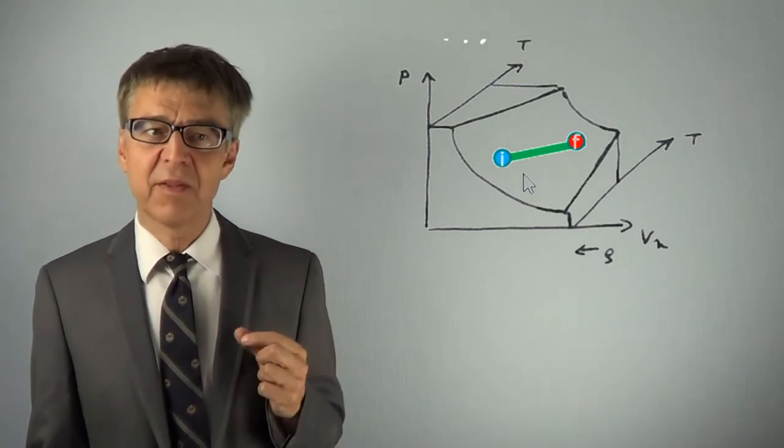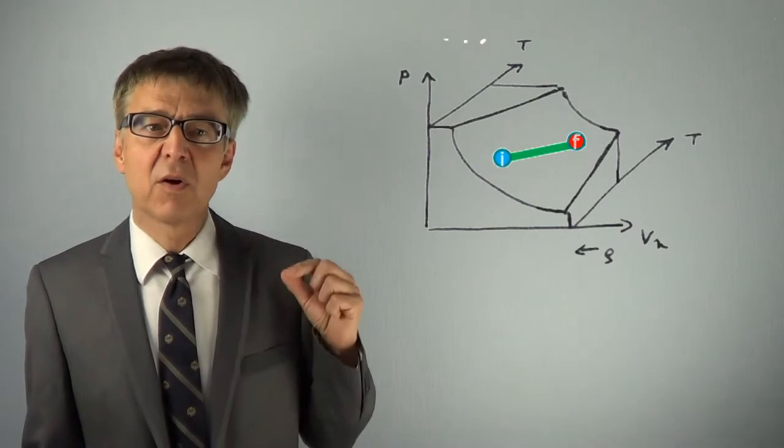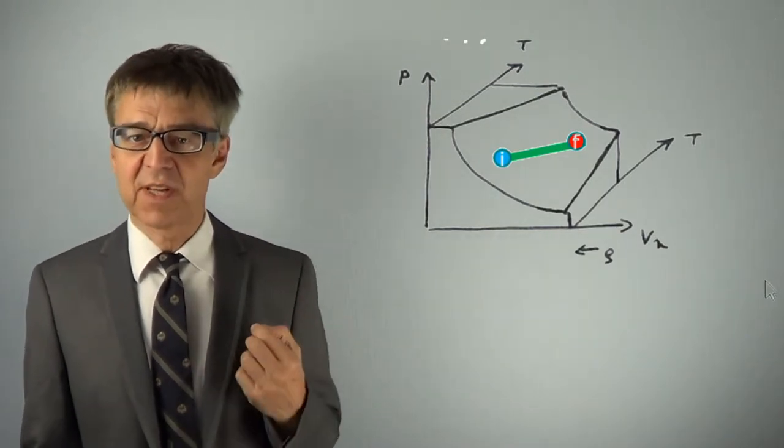Each line in the phase diagram, like this green isobar, corresponds to a process, a change of state.